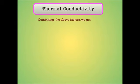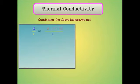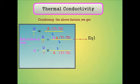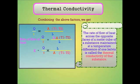Combining the above factors, rate of flow of heat is equal to k × A × (T1 - T2) / L. So the thermal conductivity of a substance is the rate of flow of heat across the opposite faces of a meter cube of a substance maintained at temperature difference of 1 Kelvin.